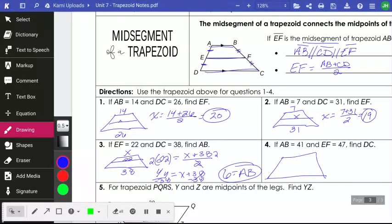If I have this trapezoid again, same one. AB is 41. EF, which is the middle, is 47. And I'm missing DC. And I'm, again, I'm getting all this from this diagram up here, where those things go.